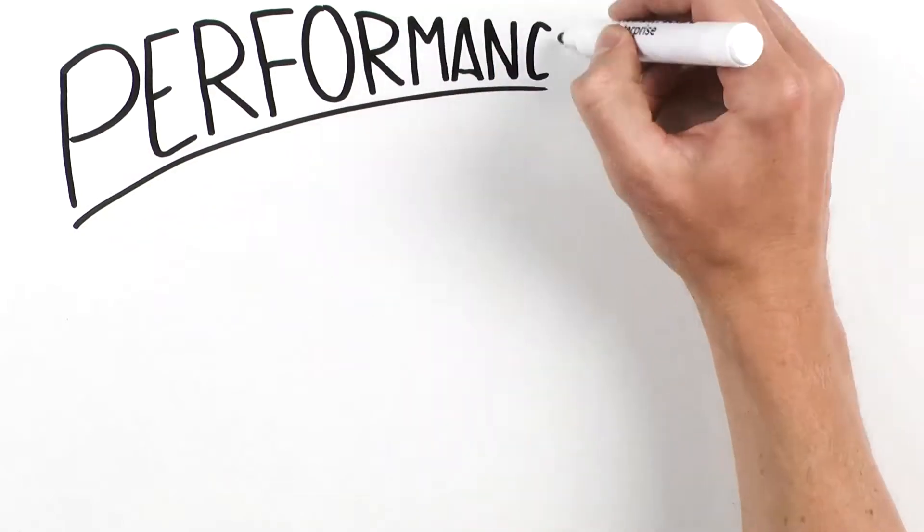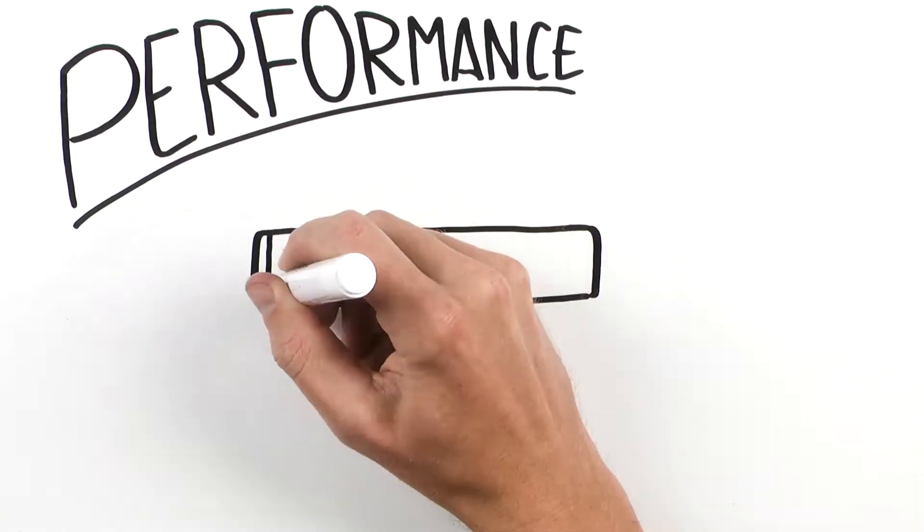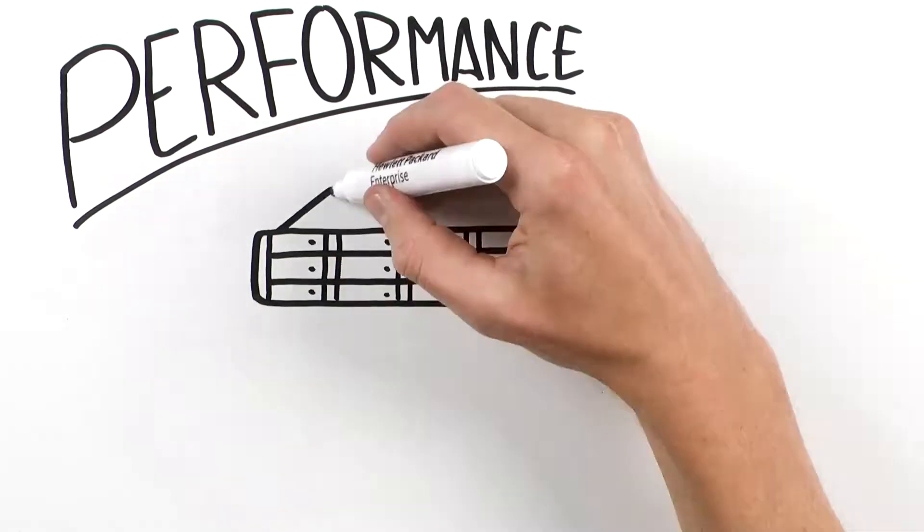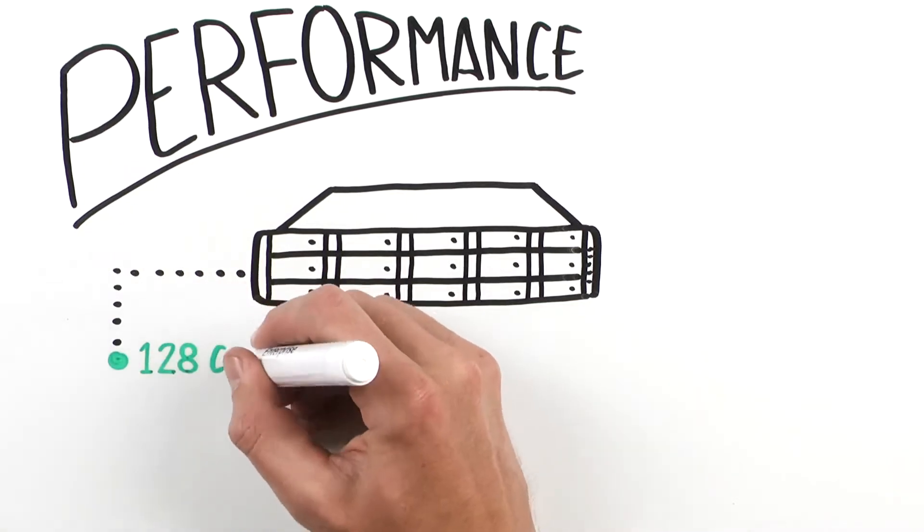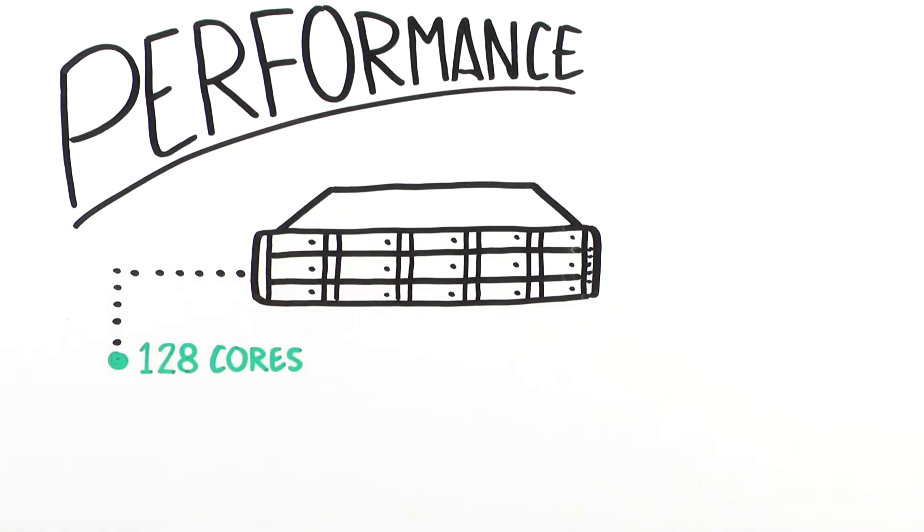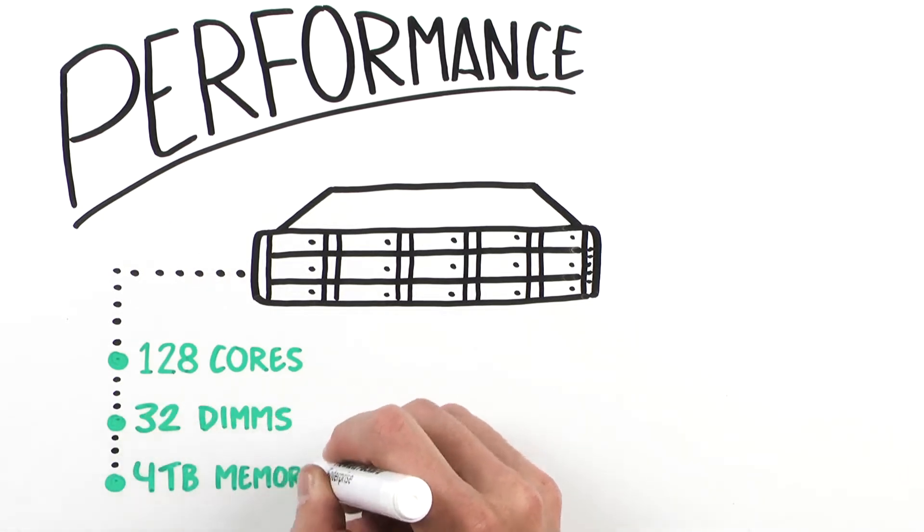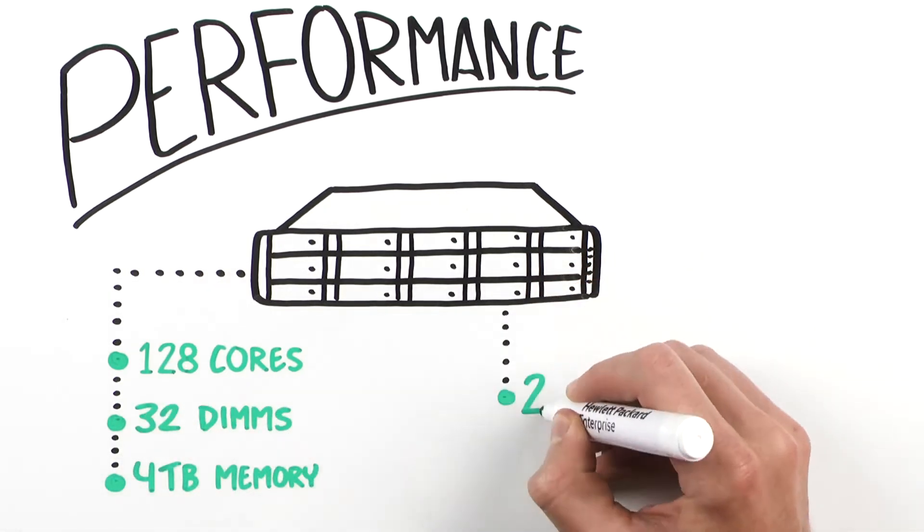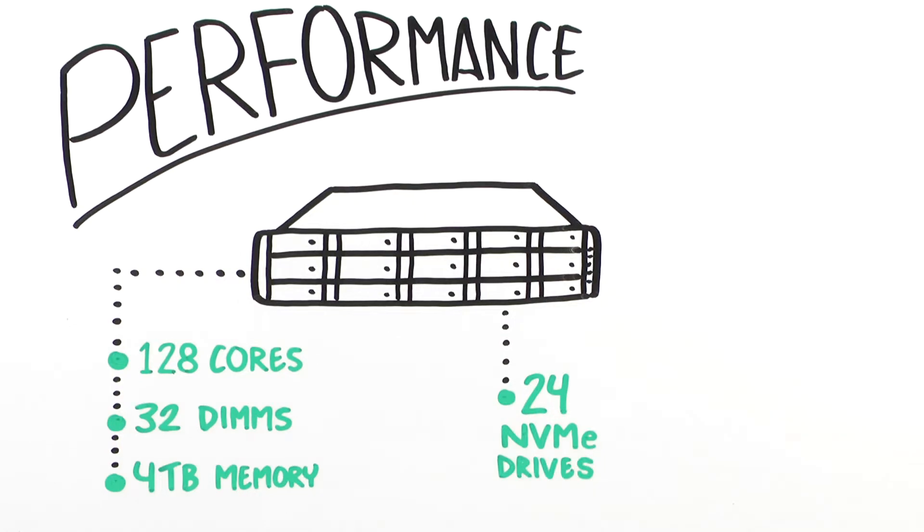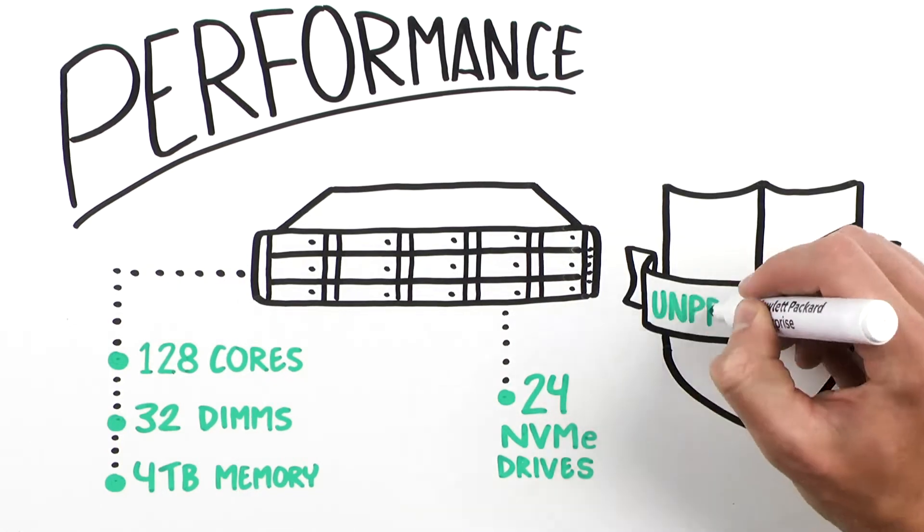Let's talk performance. The HPE ProLiant DL385 offers up to 128 cores per two-socket configuration, 32 DIMMs, and 4TB memory capacity, as well as supports up to 24 NVMe drives, all with unprecedented security. That unprecedented security? Don't worry, we'll cover that in more detail a little later.